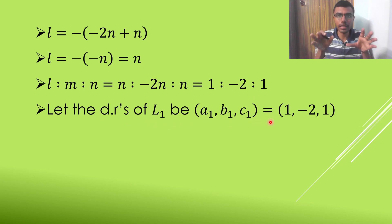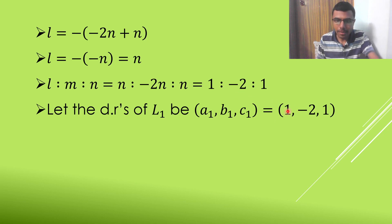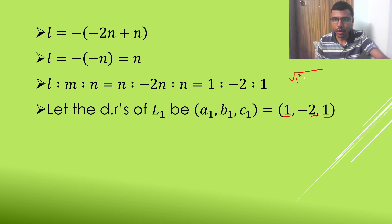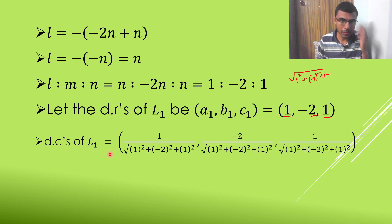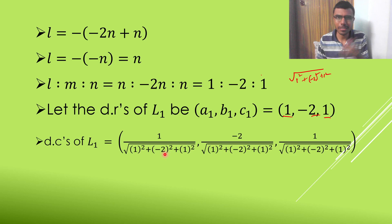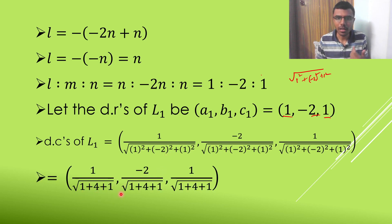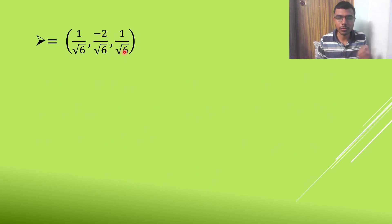They're asking us to find out the DCs, not the DRs. To find the DCs, divide each DR by the square root of the sum of squares. Here we have 1, minus 2, and 1, so divide each by the square root of 1 squared plus minus 2 squared plus 1 squared. That gives root of 1 plus 4 plus 1 equal to root 6. So the direction cosines of Line 1 are 1 by root 6, minus 2 by root 6, and 1 by root 6.